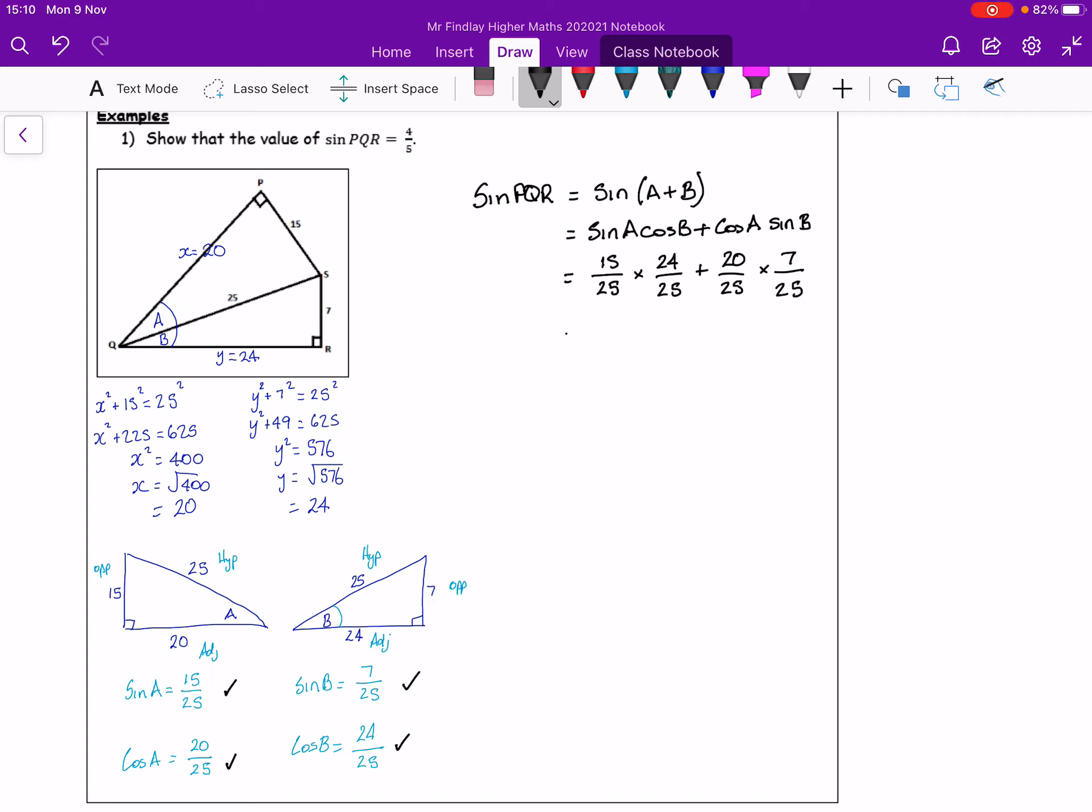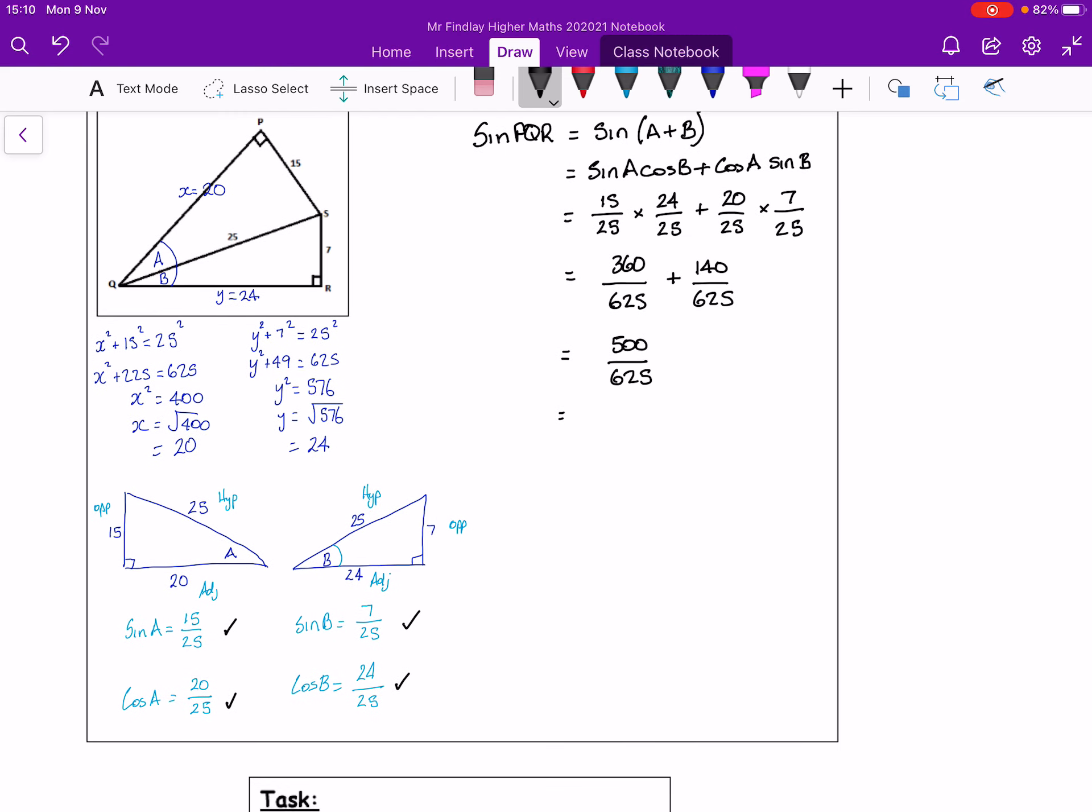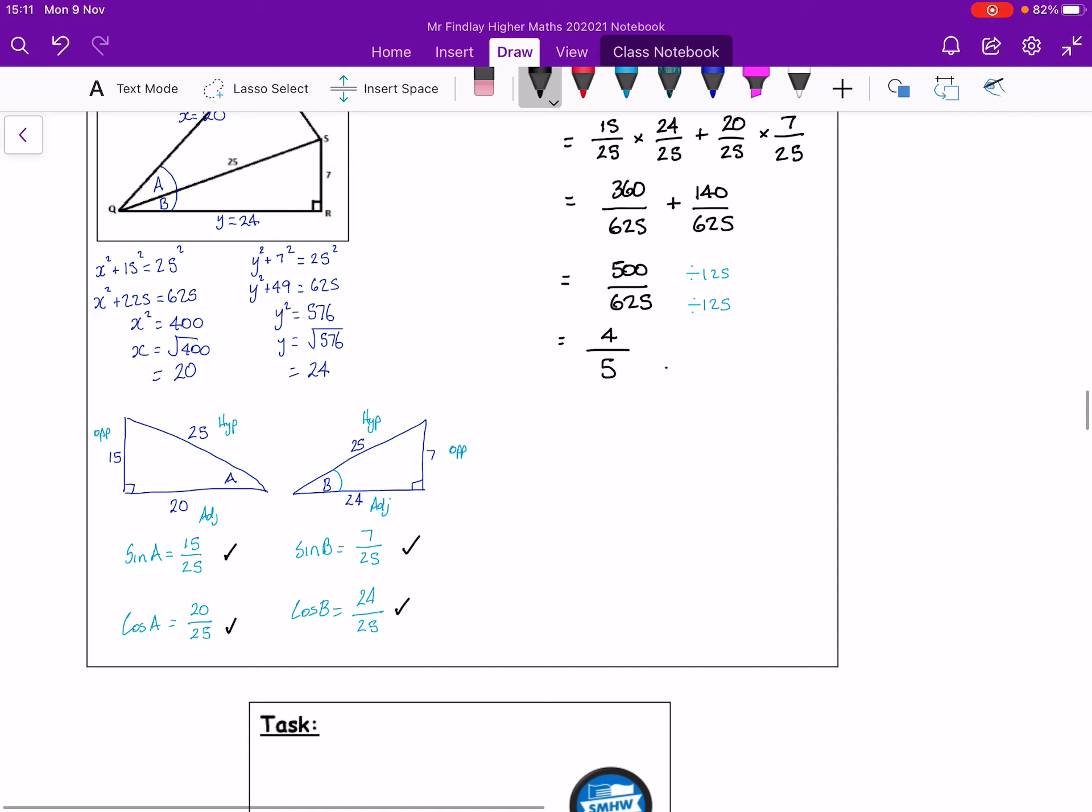So good thing, these sort of questions we know what we're aiming for. We're aiming for four fifths. 15 lots of 24 is 360. 25 times 25, 25 squared is 625. 140 over 625, which is 500 over 625. The common factor is 125. 125 into 500 goes four times, and five times in there. Okay, four fifths. That shows it as requested.